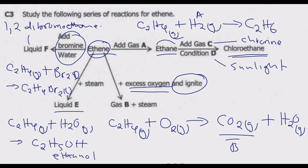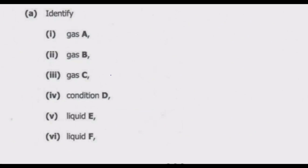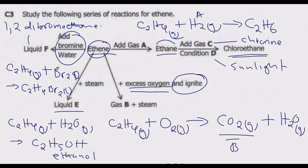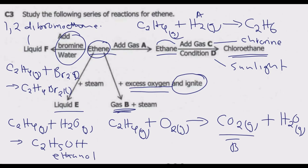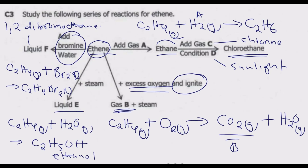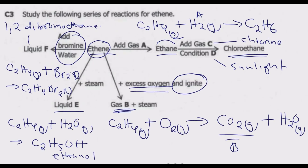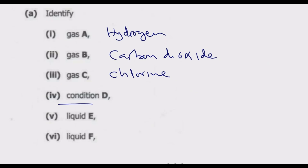Now we go back and answer question A with a summary. Gas A is hydrogen. Gas B is carbon dioxide. Gas C is chlorine. Condition D is sunlight, which is needed to break the chlorine bond to initiate the substitution reaction.